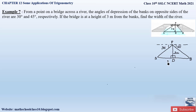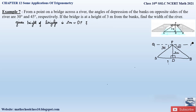Now let us write down what is given in the question. Given: the height of the bridge is 3 meters, equal to DP. If we mark the angles as Q and R, angle QPA is equal to 30 degrees and angle RPB is equal to 45 degrees. This is what is given. Now we have to find the width of the river — let width of river be AB.